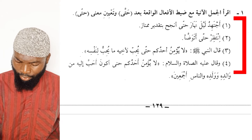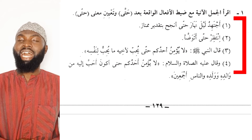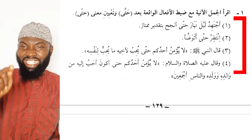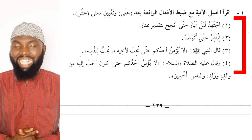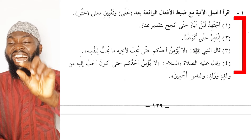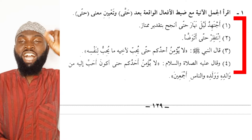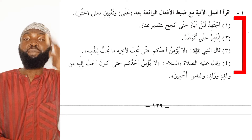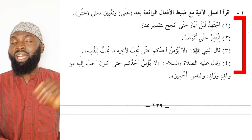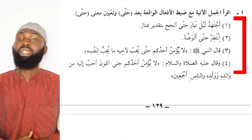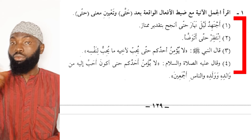Sentence two: intadhir hatta atawaddoa — wait until I perform the ablution. The word Hatta here means ila an atawaddoa — until I perform ablution. So atawaddoa carries fatha ujuban, because of the hidden An.